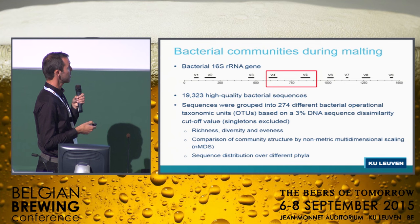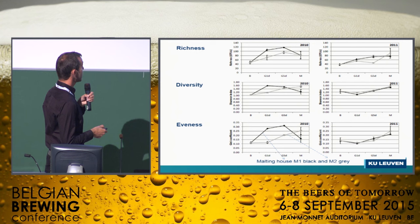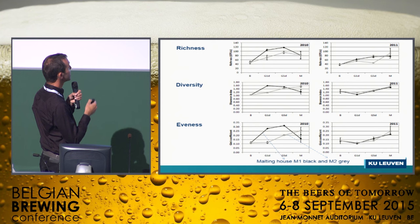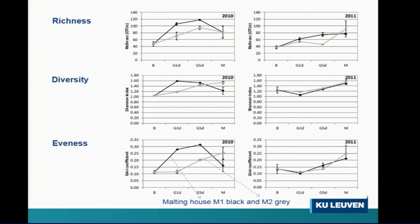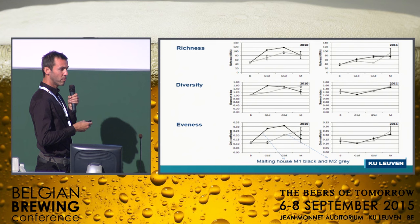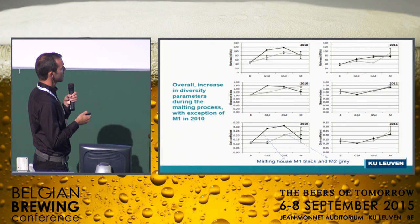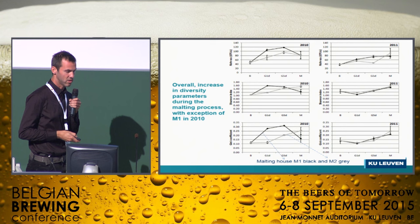We can look at communities by non-metric multidimensional scaling for visual comparison, and look at sequence distribution over different phyla. This overview of richness, diversity, and evenness shows that richness — the number of OTUs — starts with around 40 species on the barley and ends up with around 100 species on the malt. So the richness is going up; the longer the process, the more species we have. We see the same trend in diversity and evenness. Richness, evenness, and diversity all go up during the process, except for one sample taken in 2010.